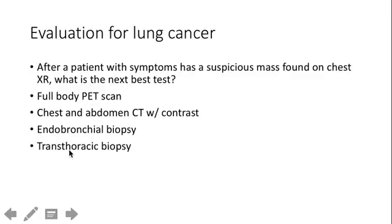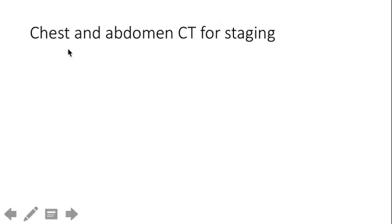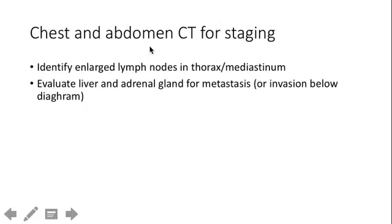These patients need a tissue diagnosis, but before you biopsy — and this is true for most cancers on the exam — you need a CT scan to stage with imaging first. If the CT shows the lung mass but also lymph node or liver involvement, that changes where you want to biopsy. Don't go straight to biopsy after finding a mass on chest X-ray. You need chest AND abdomen CT with contrast to look for enlarged lymph nodes, mediastinal involvement, and liver or adrenal gland involvement.